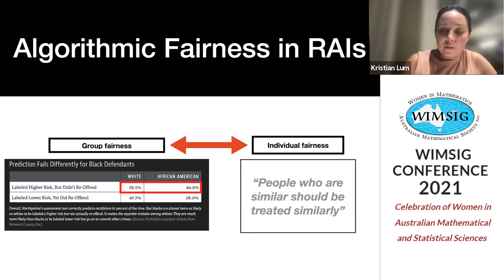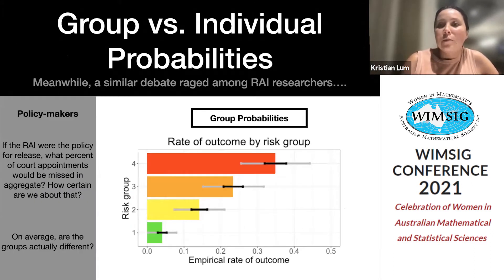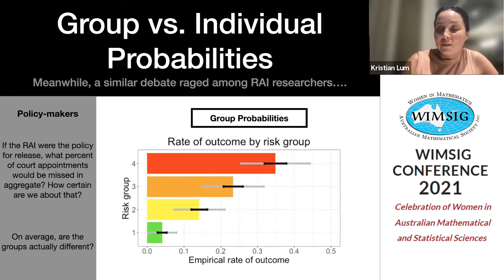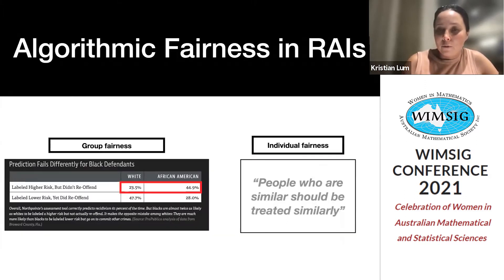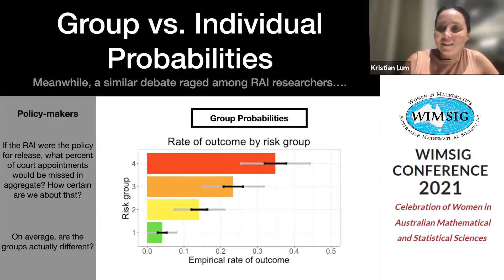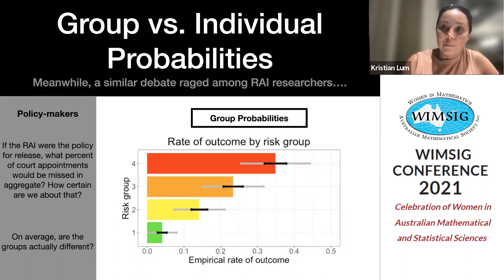Something interesting when I first came to this problem was that there is a really similar discussion happening within the subject area of risk assessment itself — among people actually building these models in criminal justice. But it looked a little different. In the algorithmic fairness world people talk about group versus individual fairness, while in criminal justice the parallel discussion is about group versus individual probabilities.